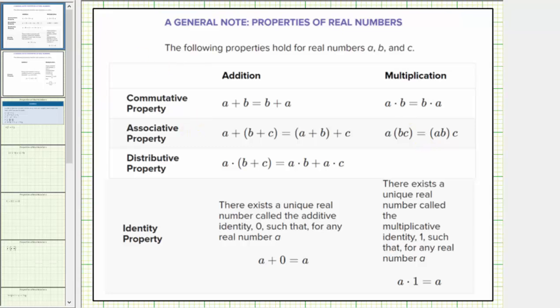Next is the distributive property, which states a times the quantity b plus c equals a times b plus a times c. The distributive property is often referred to as multiplication across addition.